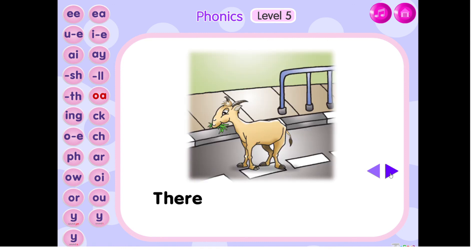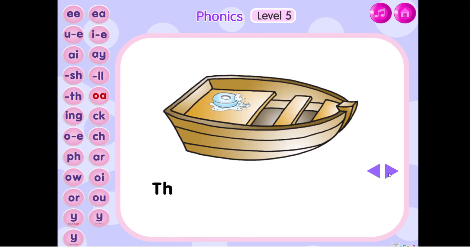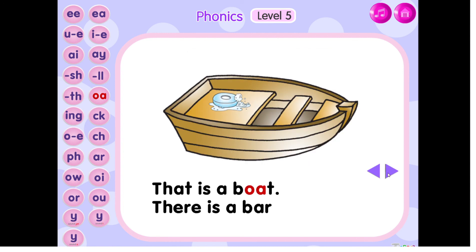There is a goat. The goat is on the road. That is a boat. There is a bar of soap in the boat.